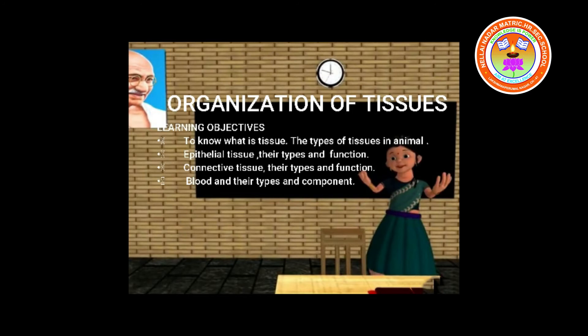Compound epithelium is made of more than one layer of cells and thus has a limited role in secretion and absorption. Its main function is to provide protection against chemical and mechanical stresses. It covers the dry surface of the skin, the moist surface of the buccal cavity, pharynx, and the inner lining of ducts of the salivary gland and pancreatic duct.